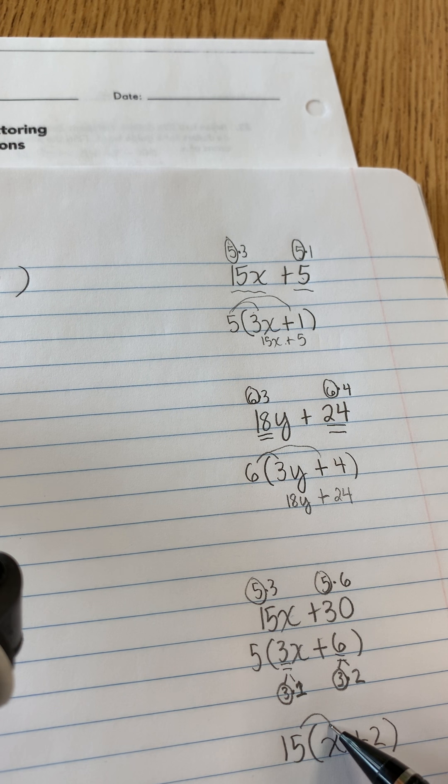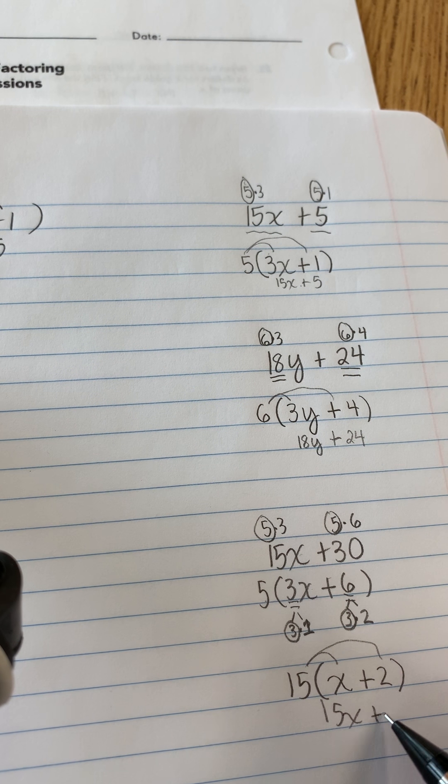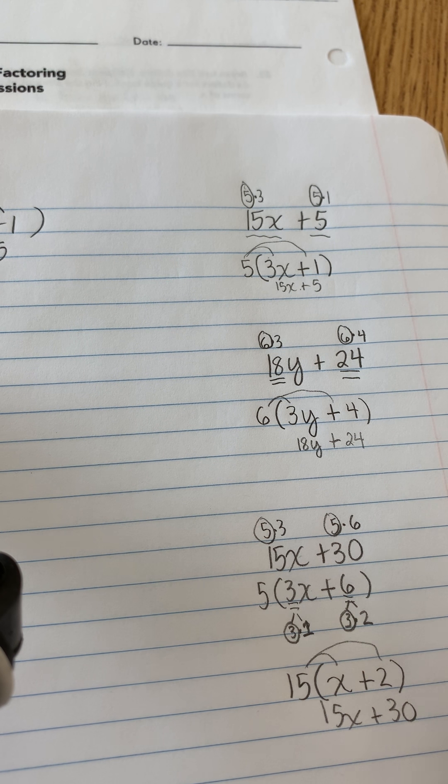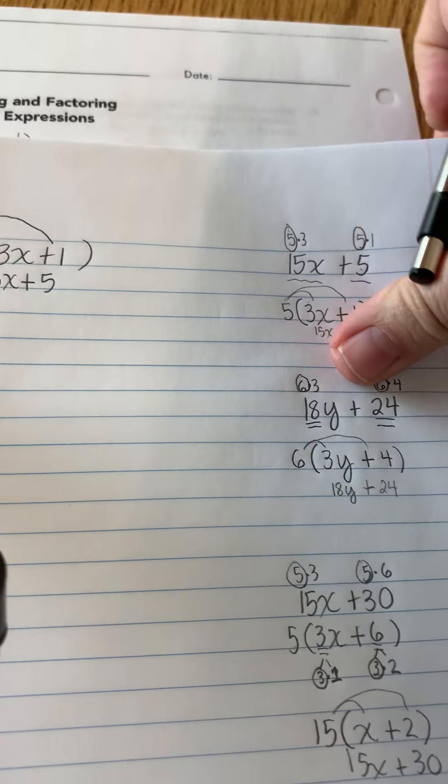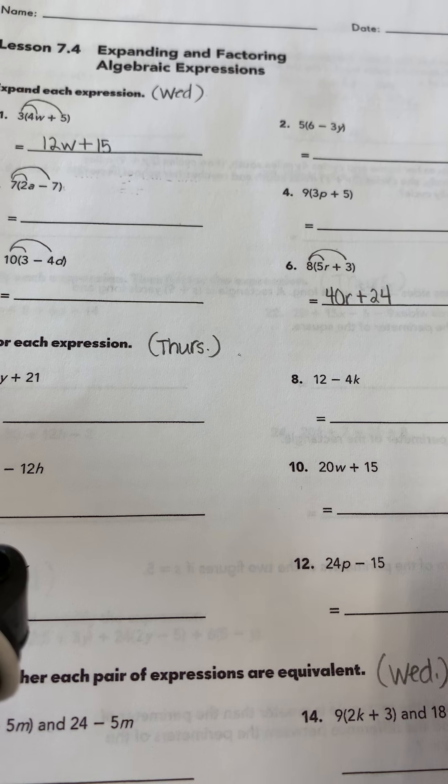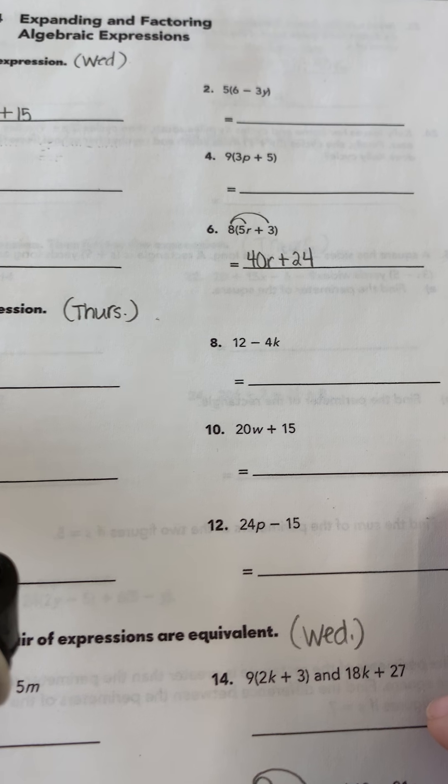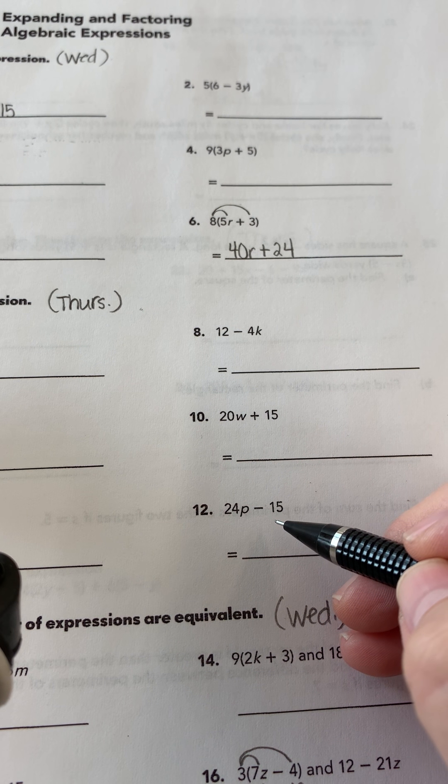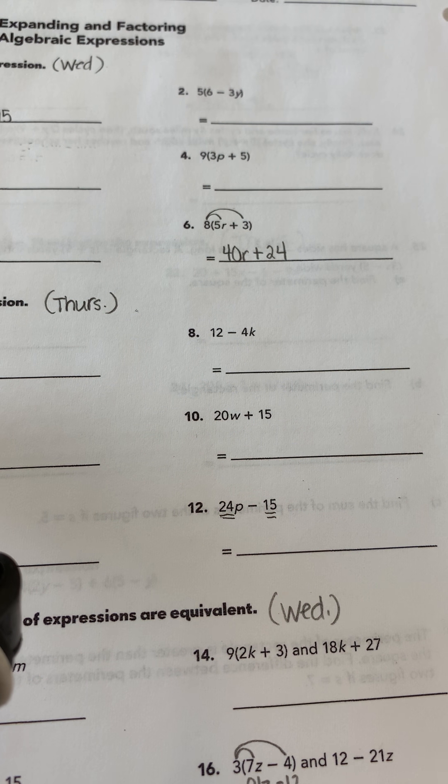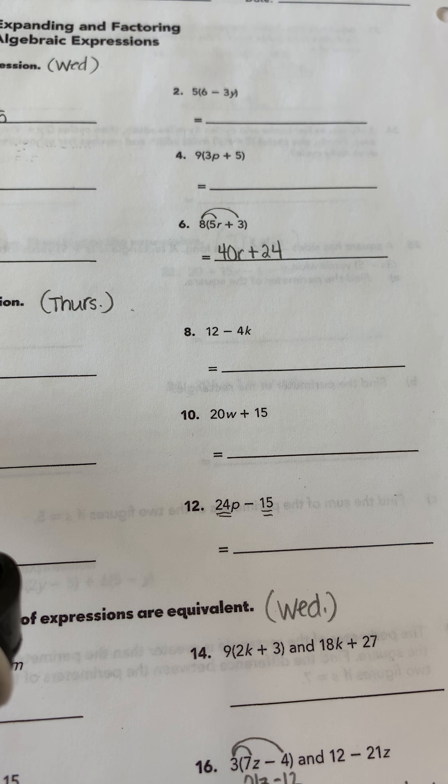And again, you can multiply it out to see if it's correct. 15 times x is 15x plus 15 times 2 is 30. I think that was a little bit much, but you get the idea. Okay, so let's look at a couple of our problems. Let's see. What would be a good one? Let's do 12. We've got 24p minus 15. So I've got a 24 and I've got a 15. I've got to figure out what is the greatest common factor of 24 and 15. Can you think of what it is?